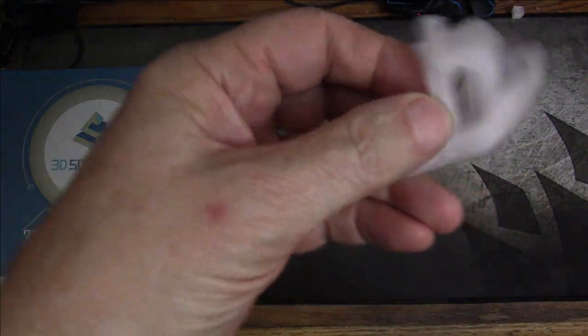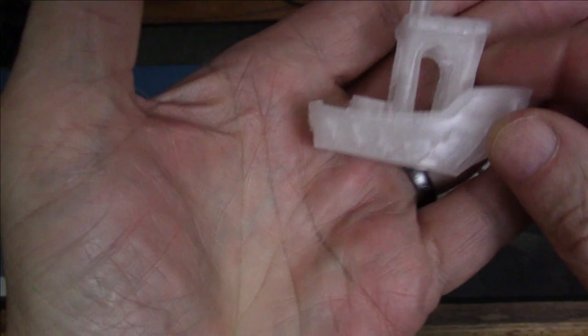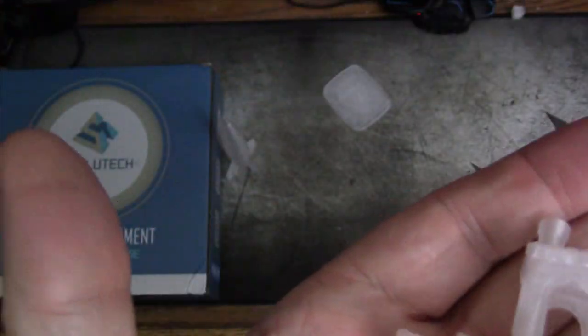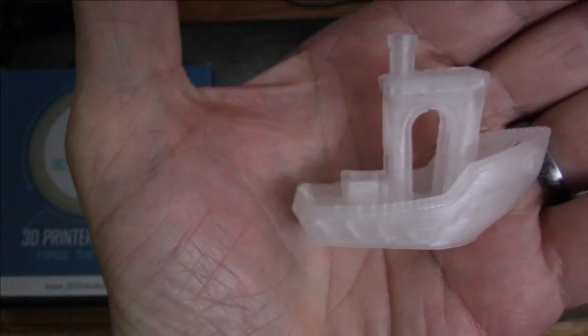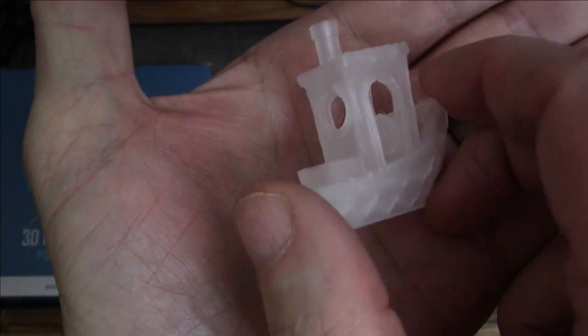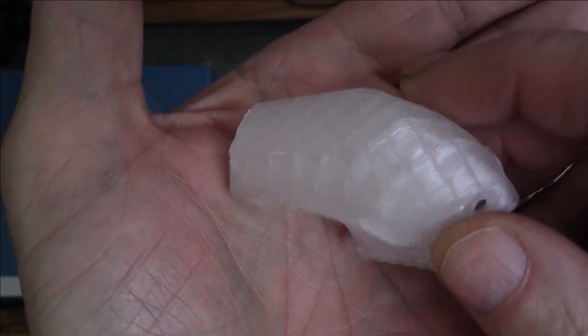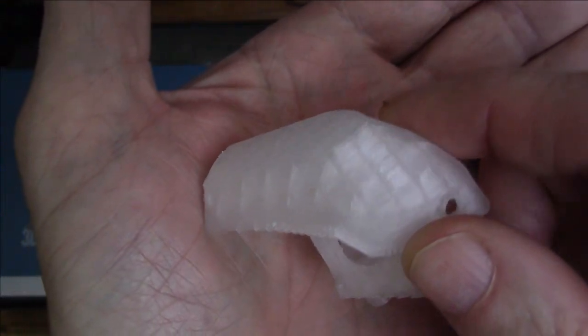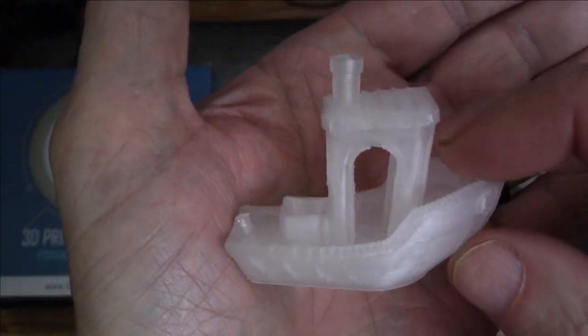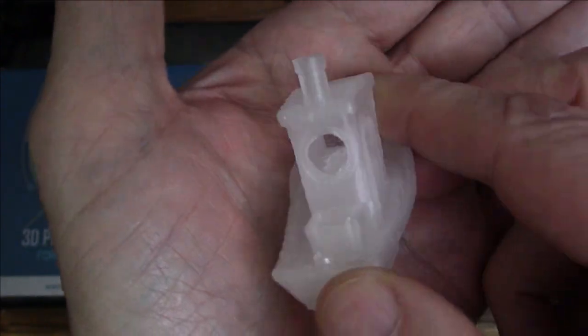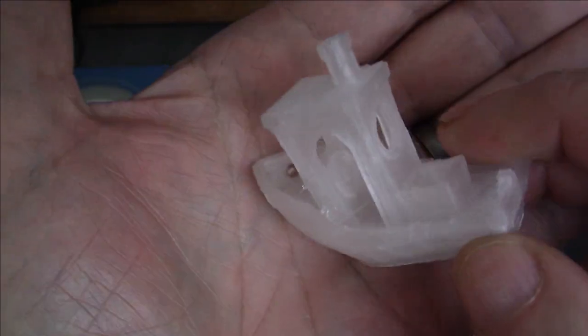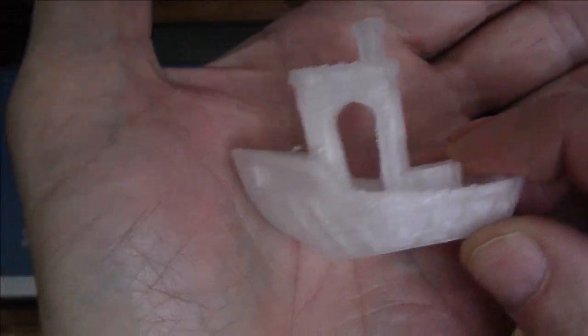So next thing, I printed the Benchy. Why not? Because you know, when you're testing stuff out, Benchy is pretty much what you print. And as you can see, this Benchy turned out pretty good. I got no real complaints. You can see right through to the infill, which tells me it probably has the opacity level that I'm looking for. Printed real nice. Got no real complaints about that Benchy. Looks good.